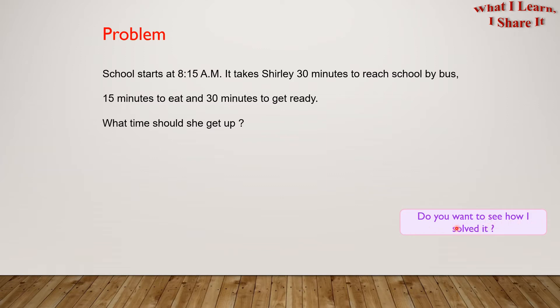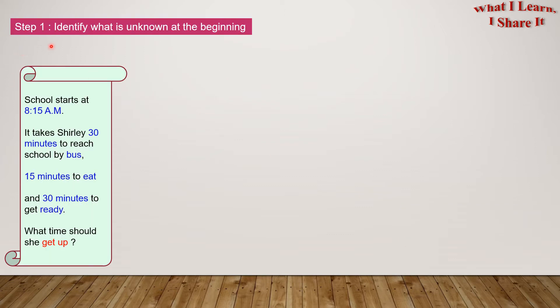Do you want to see how I solved it? I solved it in a step-by-step way. Let's see it. Step 1: Identify what is unknown at the beginning. So, what is unknown? The time to get up is unknown.